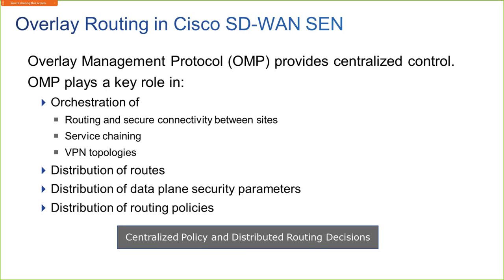One of the things I wanted to do is backfill some key concepts — especially when we're looking at the different templates and talking about the transport and service VPNs. For example, what is the difference between a transport VPN versus a service VPN? A transport VPN, which in most configurations is VPN zero, is a special use VPN that gets associated with all of the interfaces that connect to the WAN, the SD-WAN fabric. Only interfaces that are in VPN zero can create those control and data plane tunnels.